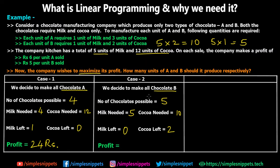The profit for five units of chocolate B is five times five, which equals 25 rupees. Case two gives more profit than case one even though chocolate A has a higher per-unit profit margin. The reason is that chocolate B requires fewer units of cocoa, so we can produce more units. This shows that resources must also be taken into consideration when optimizing profit — we need to use resources efficiently to get the maximum profit.